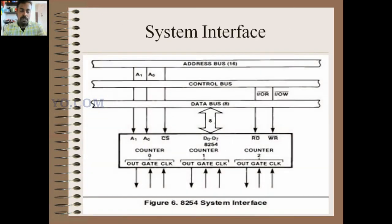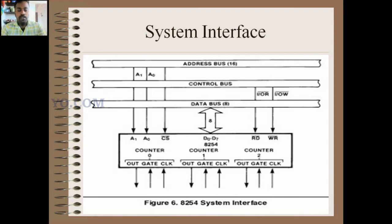For system interface — connecting 8254 with the microprocessor — the data lines D0 to D7 are directly connected to the microprocessor's data bus. The control signals (read, write, chip select) are connected to the control bus, and address lines A0 and A1 are connected from the address bus. Each counter has two inputs and one output: OUT is the output, GATE and CLK are inputs — this applies to counter 0, counter 1, and counter 2.